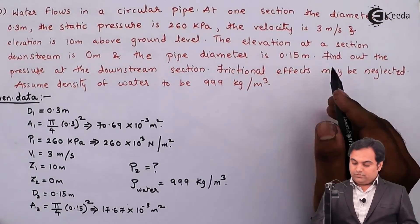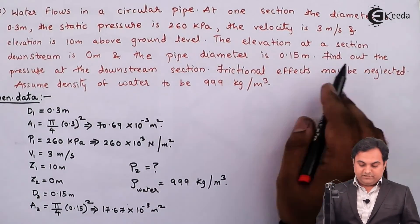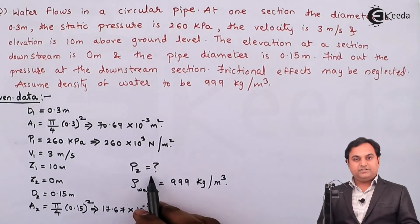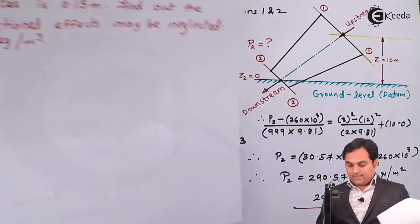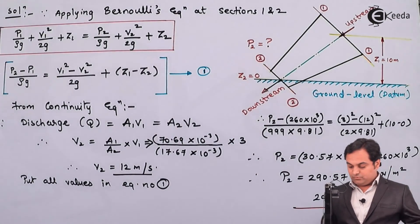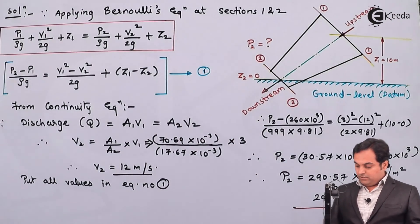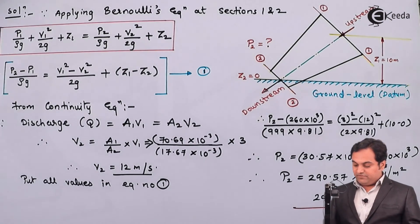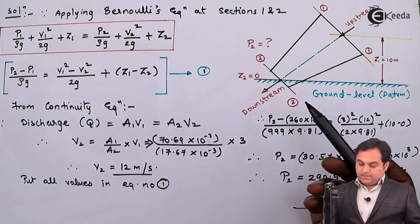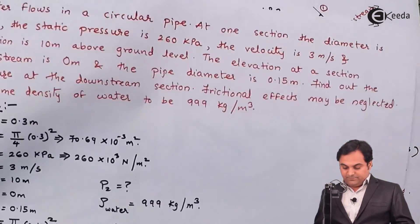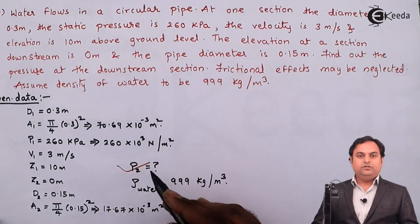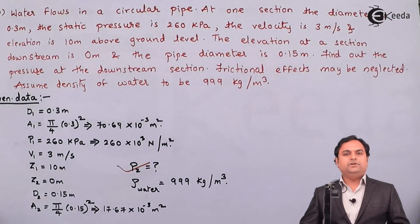So the question was to find the pressure at the downstream section, that is p2. The pressure at this downstream section is 290.57 kilo Pascal. With p2 known, the problem is complete. Thank you.